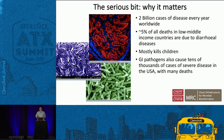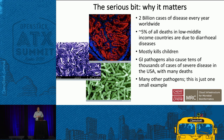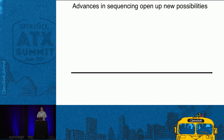Gastrointestinal pathogens are one of the key reservoirs for things like antimicrobial resistance. They're big problems, and there are many other pathogens — this is just one example of why we should care about bacteria.